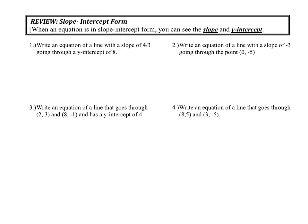Today we're going to do a quick review of slope-intercept form, and then we're going to learn a new form called point-slope form. Slope-intercept form is the equation y equals mx plus b, where the coefficient of x is your slope and b is your y-intercept.